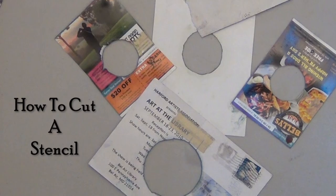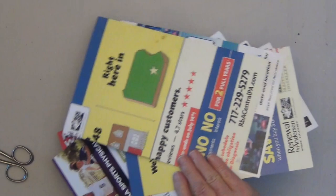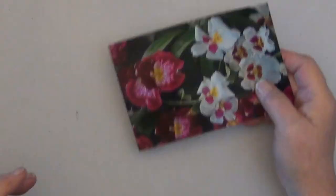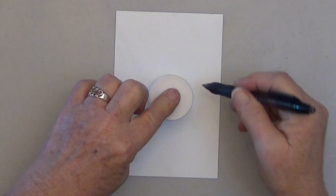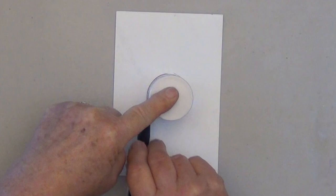You can use old advertising flyers you get in the mail, especially if they're laminated on both sides. They make good stencils. For this demo I'm going to use an old photo. Put anything circular on top of your photo and trace around it.